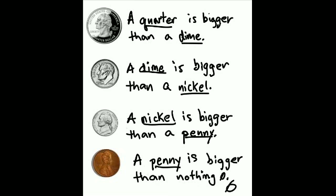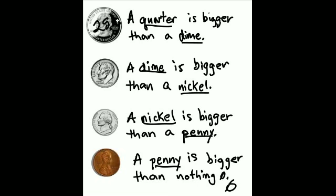Remember, a quarter is 25 cents — and that's a C with a line through it. A dime is 10 cents — that's a C with a line through it. A nickel is 5 cents — and that's a C with a line through it. And a penny is 1 cent.